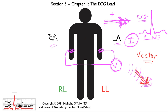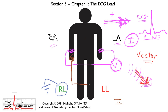In most ECG systems, the right leg is a ground — it helps the machine determine where zero volts is and avoids excessive noise in the recording. So it's the left leg that becomes important in recording ECGs. Lead 2 is recorded from the right arm to the left leg, and Lead 3 is recorded from the left arm to the left leg.